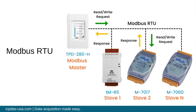This is an example of how Modbus RTU works. Our TPD controller can be used as the Modbus master, and the TMR5, M7017, and M7060 can be used as slaves.